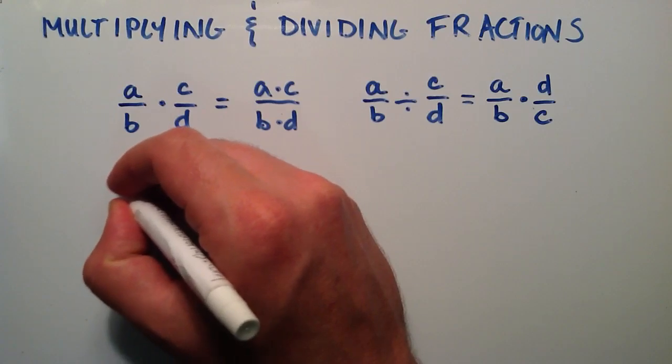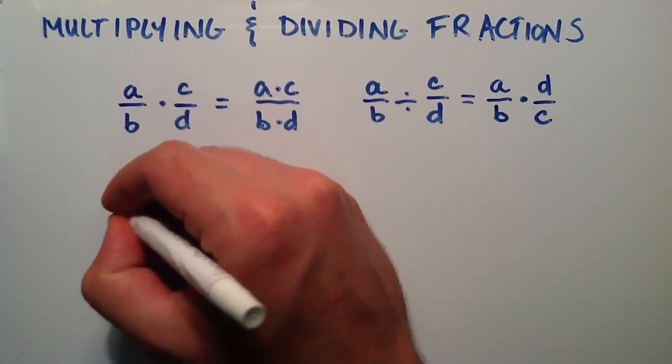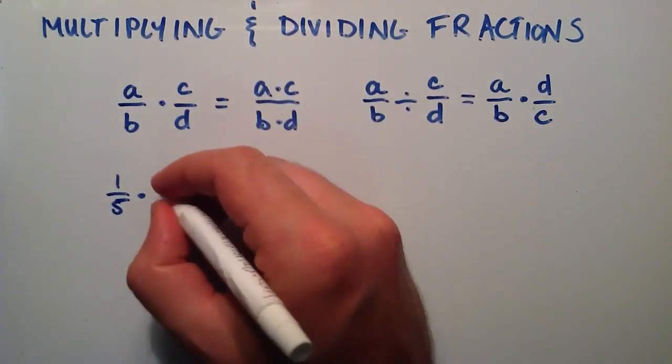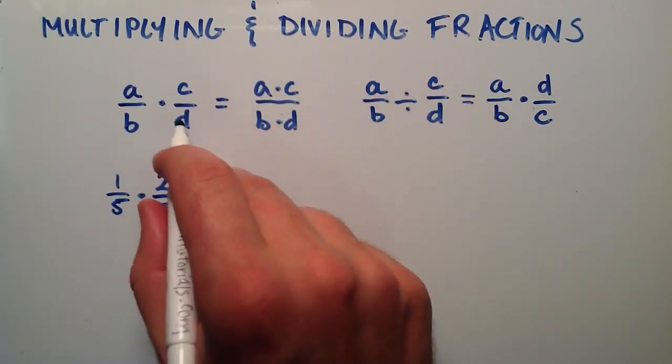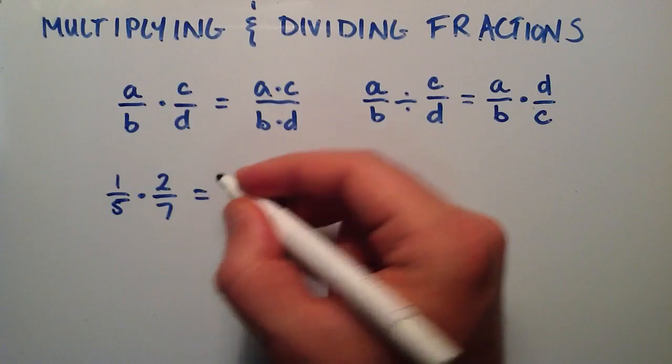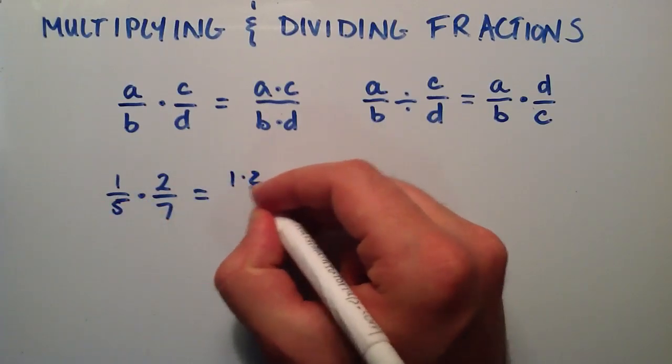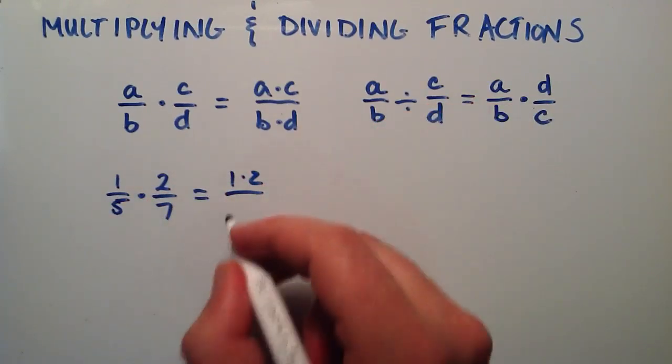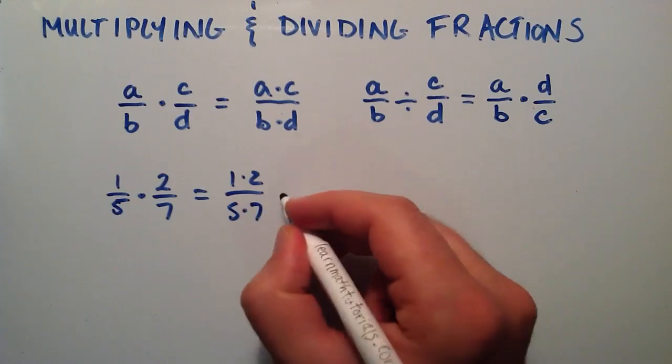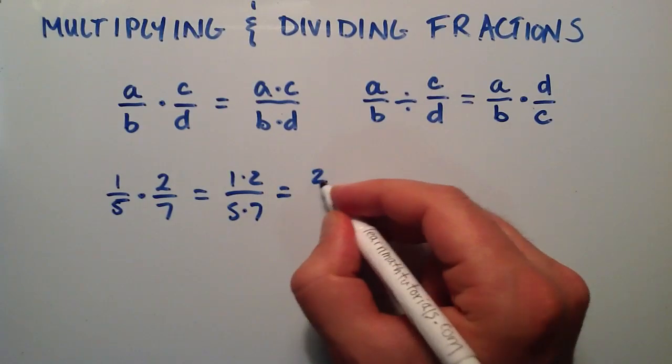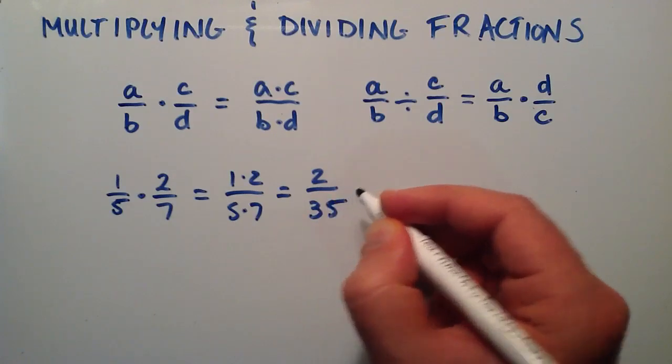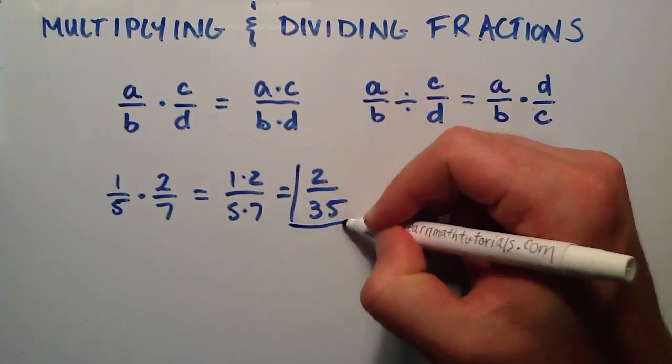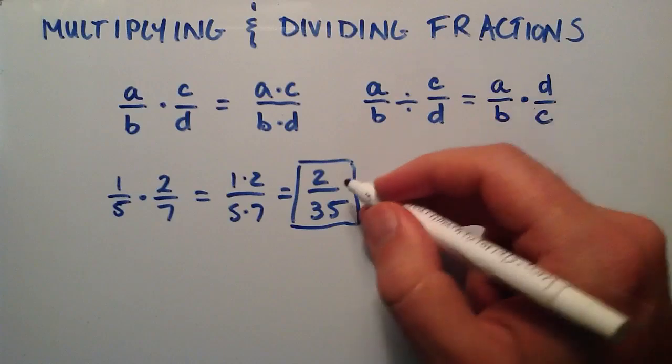Let's say that we have 1 fifth, and we want to multiply that by 2 sevenths. Well, we just simply multiply the numerators together, 1 times 2, and we multiply the denominators together, 5 times 7. 1 times 2 is equal to 2, and 5 times 7 is equal to 35. So we have the answer, 2 divided by 35.